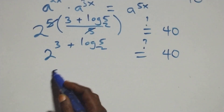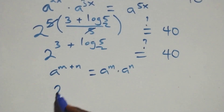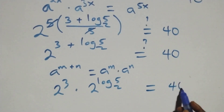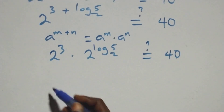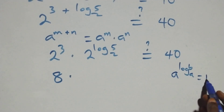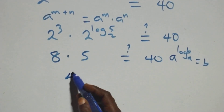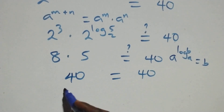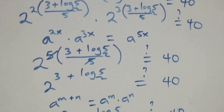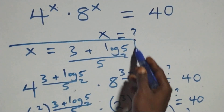This follows the law of indices. We have 2 raised to power (3 plus log₂5), which equals 2³ times 2^(log₂5). That gives us 8 times 5, which equals 40 on this side. This satisfies the given problem, confirming x equals (3 plus log₂5)/5.